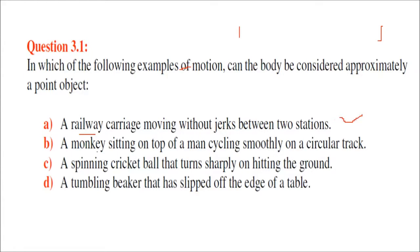A monkey sitting on top of a man cycling smoothly on a circular track. If it is a circular track and a monkey is on top of a man who is cycling, then with respect to the circular track the monkey's size is less. So you can consider the monkey as a point object.